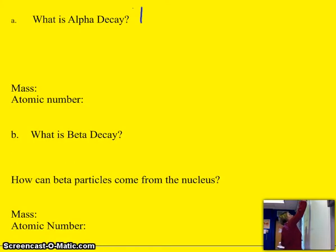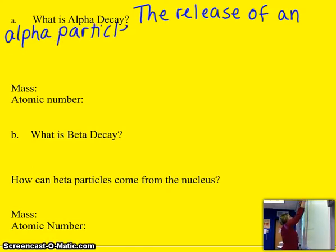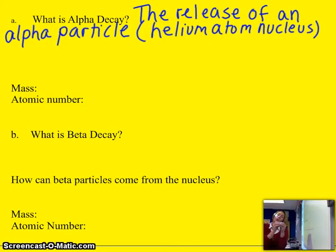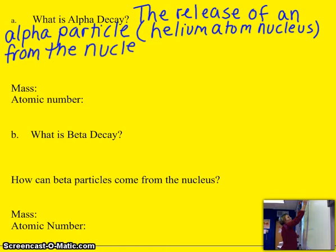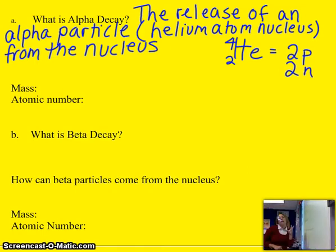Alpha decay is the release of an alpha particle from the nucleus. An alpha particle is really just the nucleus of a helium atom. It's not the whole helium atom because it doesn't contain electrons, it's just the nucleus. So if we look at the notation for an alpha particle, the atomic number is the number of protons. It's made of two protons, and you get the number of neutrons by subtracting. So it's also two neutrons. Alpha decay is when an unstable nucleus releases two protons and two neutrons.